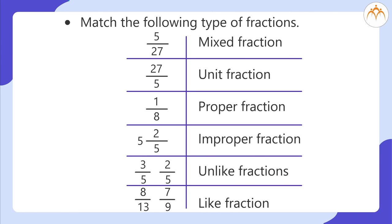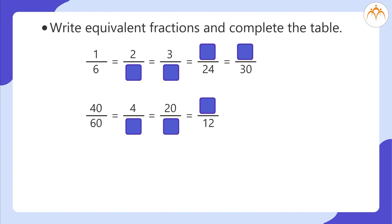Exercise: Match the following fractions to their types — 5/27, 27/5, 1/8, 5 and 2/5, 3/5, 2/5, 8/13, 7/9 — to mixed fraction, unit fraction, proper fraction, improper fraction, unlike fractions, and like fractions. Also write equivalent fractions: 1/6 = 2/__ = 3/__ = __/40 = __/30; and 40/60 = 4/__ = 20/__ = __/12.